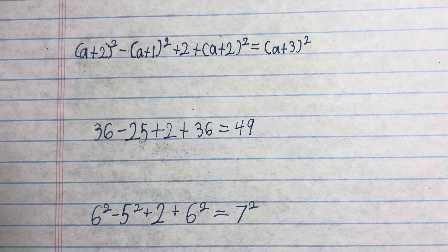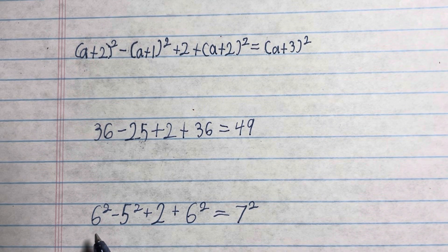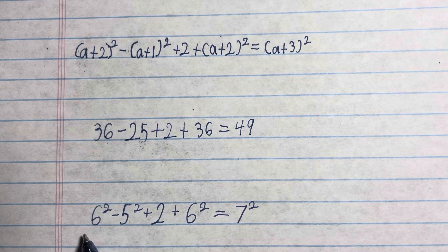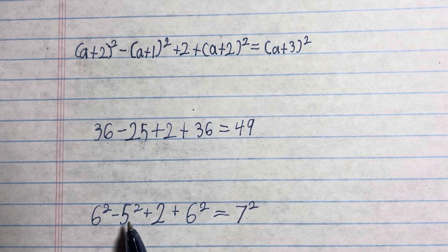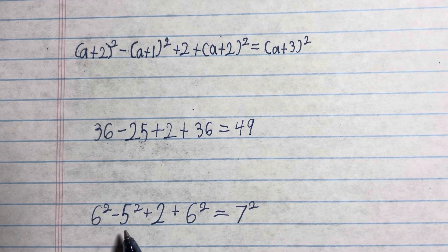So basically what this is saying is, let's say you have 6, the number below it would be 5. If you square both of those and find the difference of them,